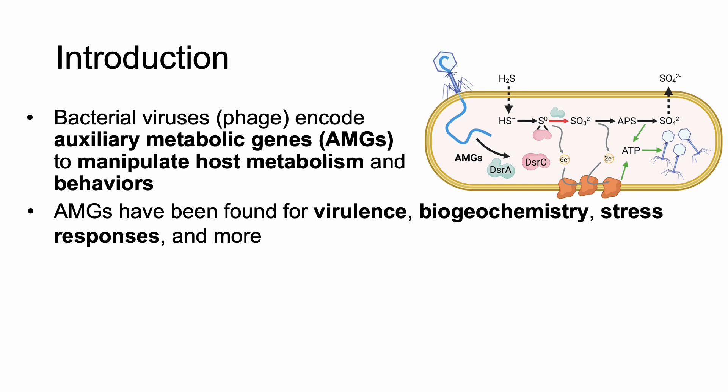The ultimate effect is that more ATP is generated for the benefit of the phage. Other examples of functions that phage have been found to manipulate include virulence and toxin production, other biogeochemical cycles like the carbon and nitrogen cycles, stress responses, and many other functions. This ultimately means that phage have the potential to shape microbial communities to a desired functional state to ultimately benefit themselves.